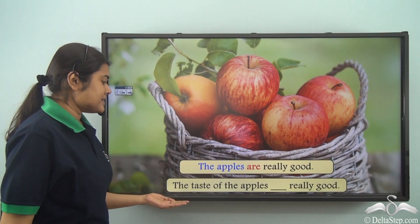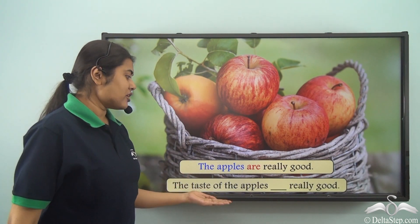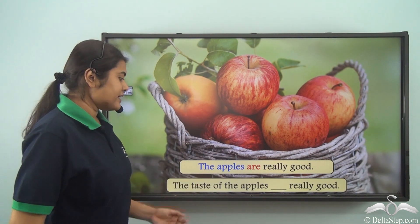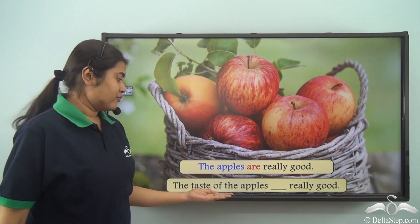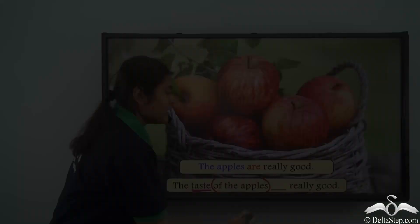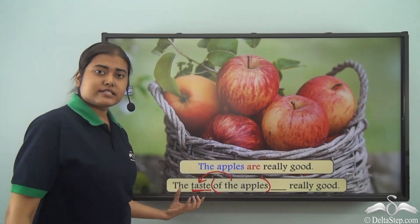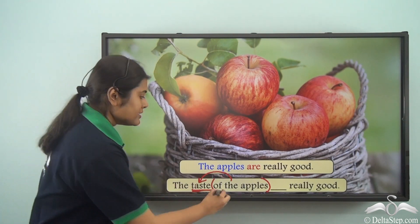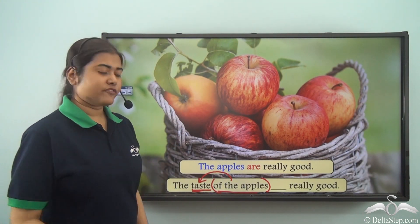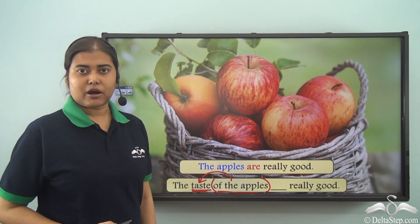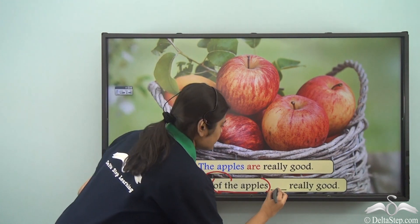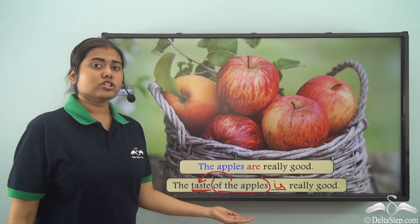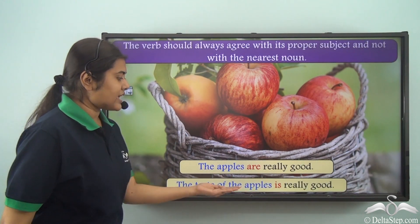Now if the sentence is 'the taste of the apples dash really good,' will it still be 'the taste of the apples are really good'? No. Because in this case, the main noun of the subject is 'taste.' This part 'of the apples' is actually modifying the noun taste — it is additional information about whose taste we are talking about. Now taste is a singular noun, hence we will use 'is' and not 'are.' So: the taste of the apples is really good.